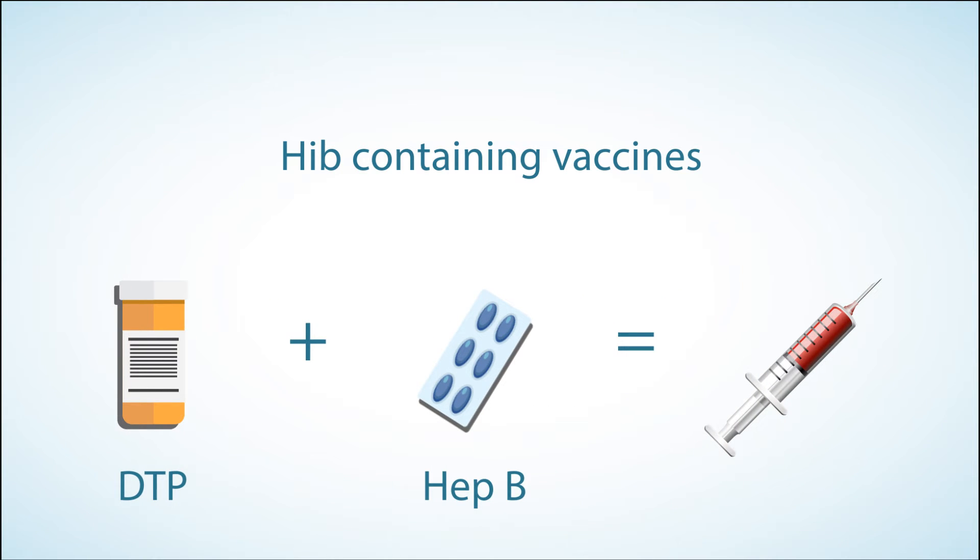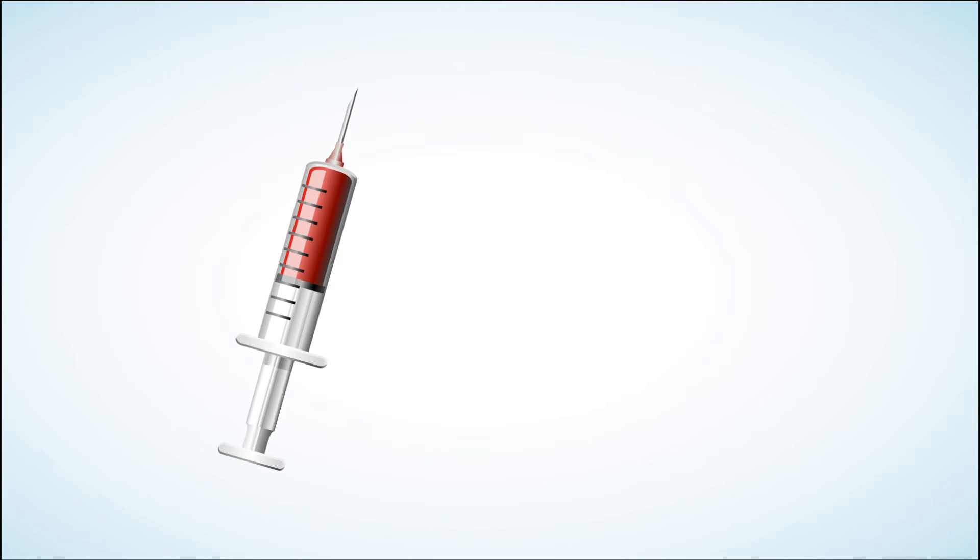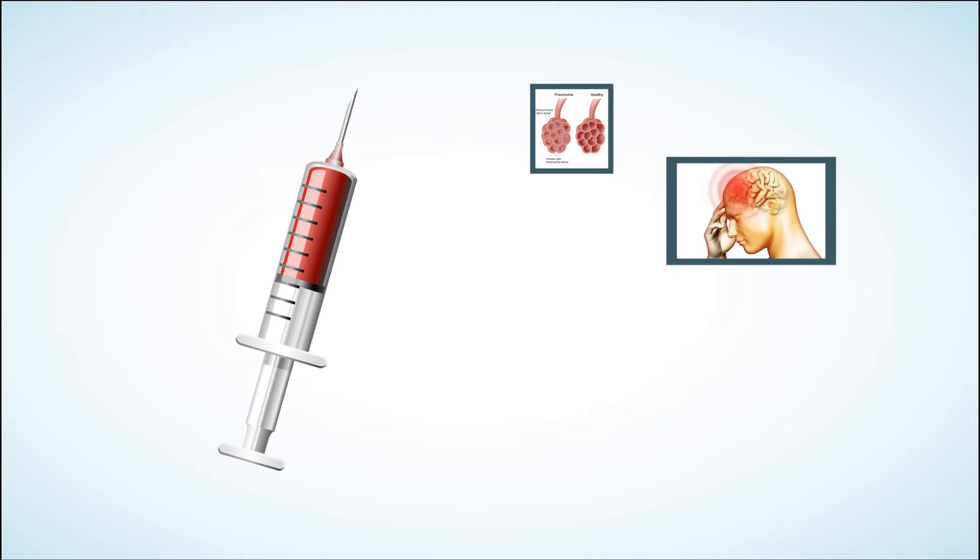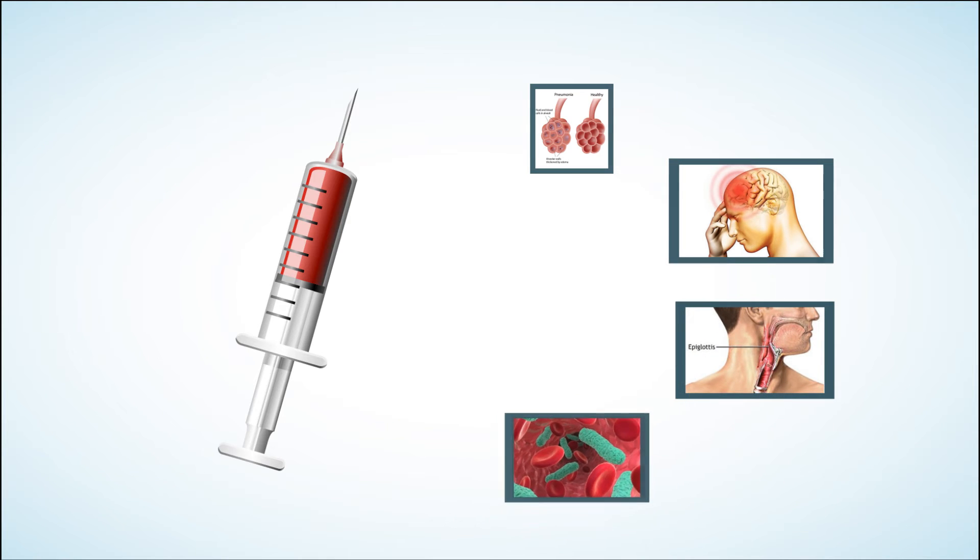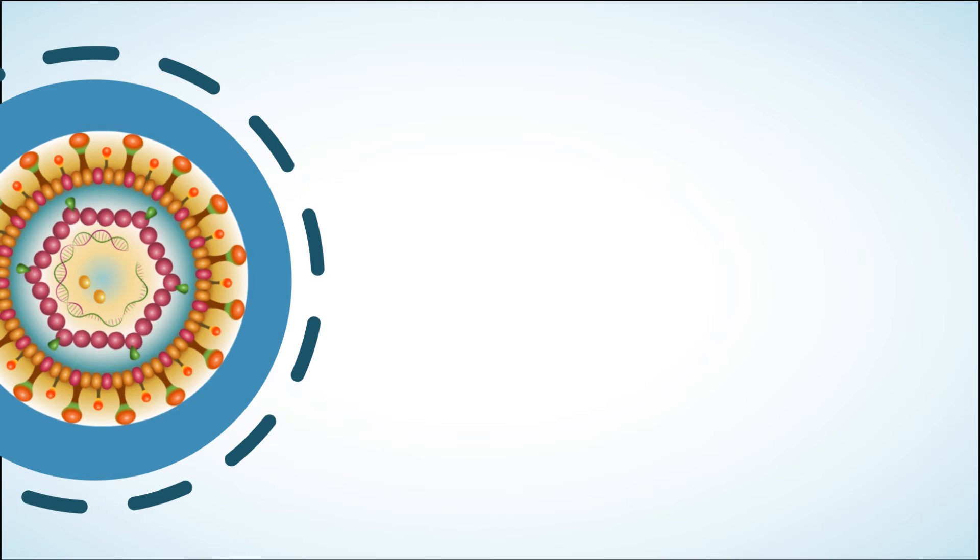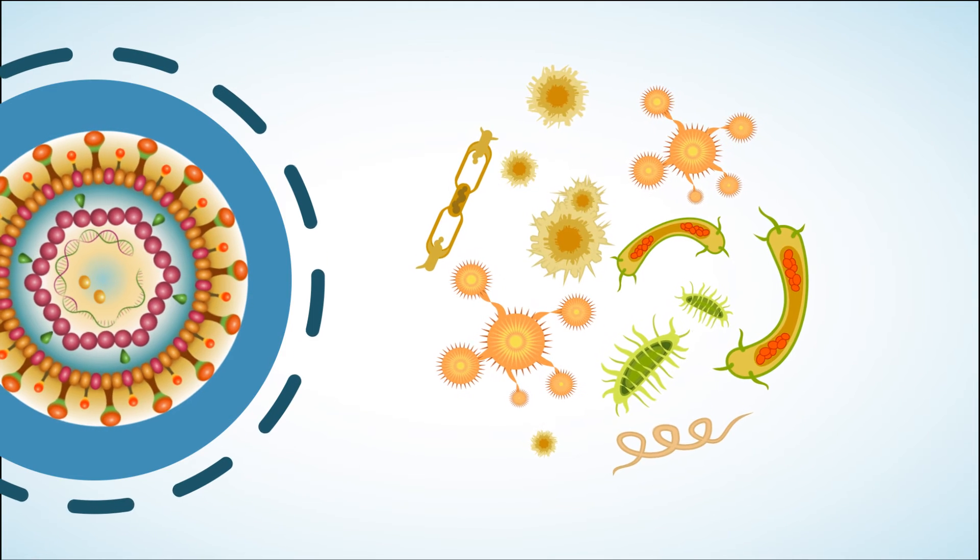Hib containing vaccines prevent pneumonia, meningitis, epiglottitis, septicemia, and other Hib disease. They do not protect against other types of Haemophilus influenzae or other bacteria that cause similar diseases.